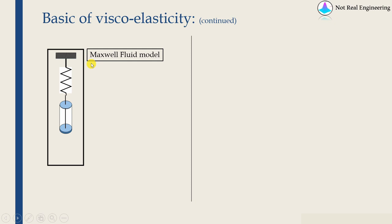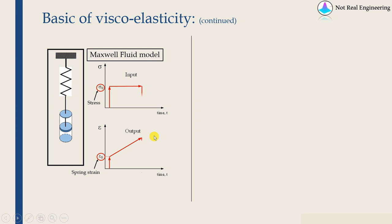Over here, let's say if we apply a load, what will happen is, because of this spring, there will be some instantaneous deformation. And then that deformation will keep on increasing as long as load is applied. And when we remove the load, whatever instantaneous deformation happened, that will be recovered back because of this spring. And there will be some permanent deformation as well, which will be because of this dashpot.